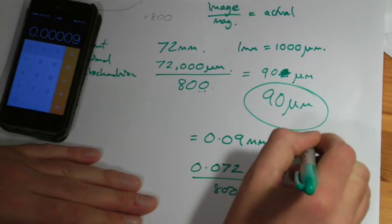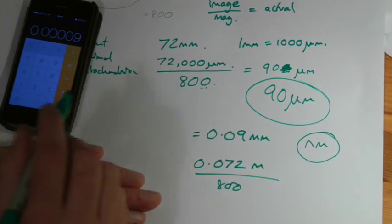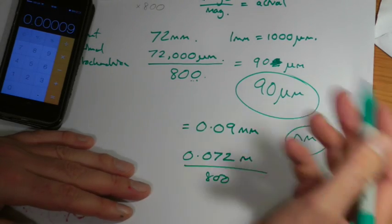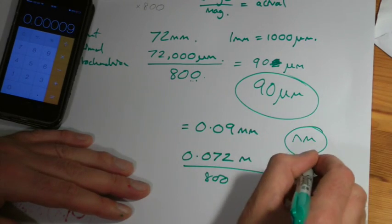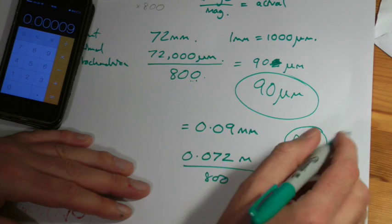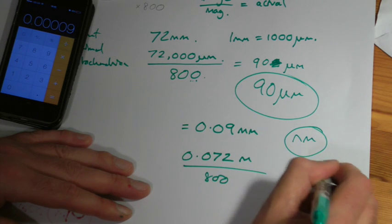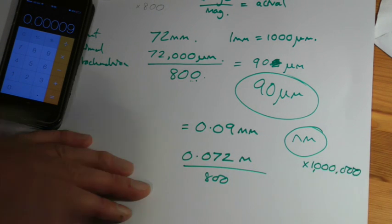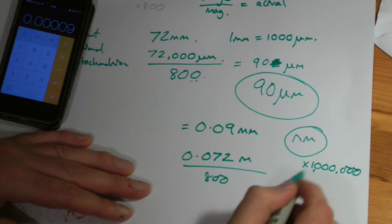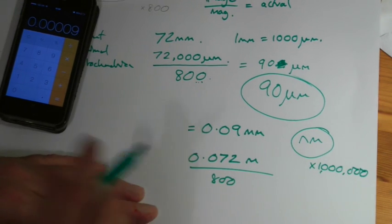Occasionally you'll come across things where they want you to work things out in nanometers. Perhaps if you're working out the size and thickness of cell membrane, nanometers, you would multiply millimeters by a million. But then you go through the same process and that would come out giving you answer in nanometers.